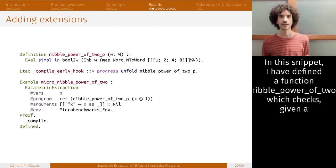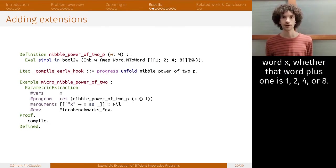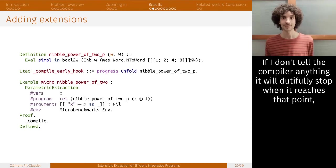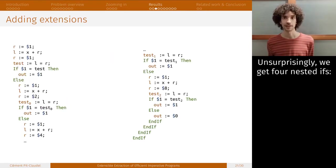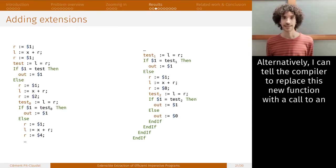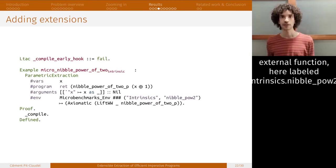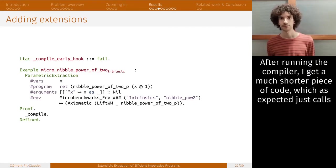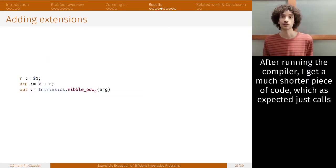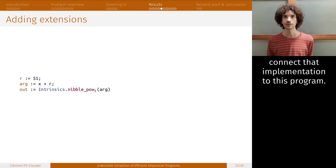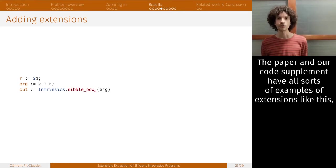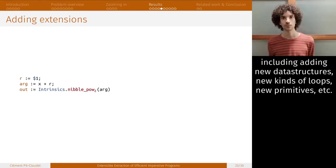I'll show you one more to demonstrate how we concretely implement extensions when we want to teach the compiler about new patterns. In the snippet, I have defined a function nibble power of two, which checks, given a word x, whether that word plus one is one, two, four, or eight. The Galena implementation is using four nested ifs. If I don't tell the compiler anything, it will dutifully stop when it reaches that point and ask me how to compile this new function that I just introduced. So here, I'll just tell it to unfold it and compile its body. And surprisingly, we'll get four nested ifs. Alternatively, I can tell the compiler to replace this new function with a call to an external function, here labeled intrinsics.nibble.pow2. After running the compiler, I get a much shorter piece of code, which as expected just calls an external function. I can write it by hand in a separate language, and then I can use our verified linking facilities to connect that implementation to this program. The paper and our code supplement have all sorts of examples of extensions like this, including adding new data structures, new kinds of loops, new primitives, and so on.